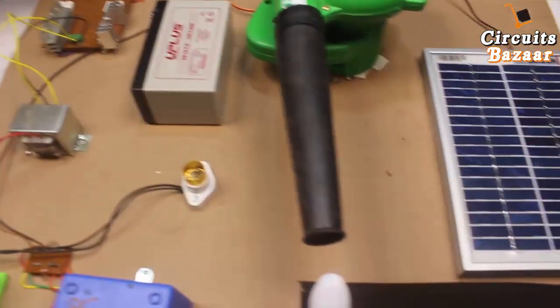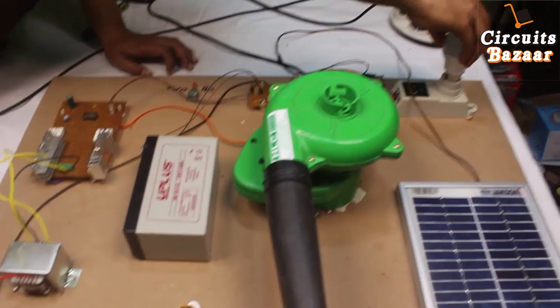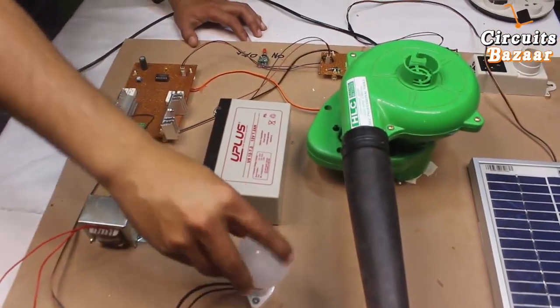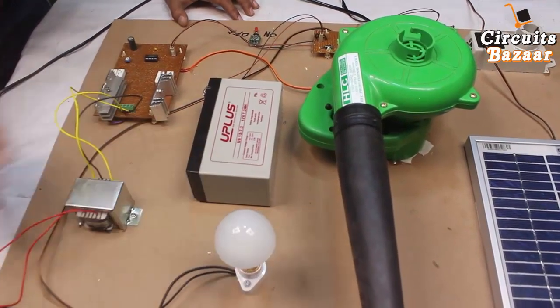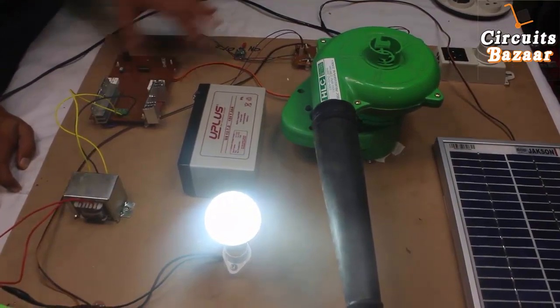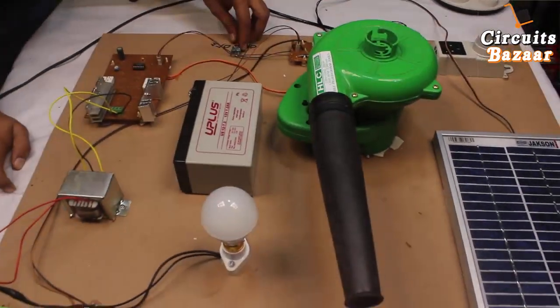I'm going to use this AC bulb. Now turn on the inverter. You can see that this bulb is on because the inverter is working. If you turn it off, you can see that it's not working.